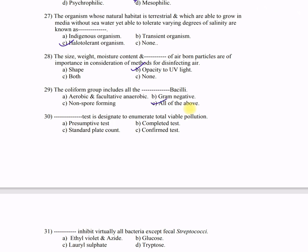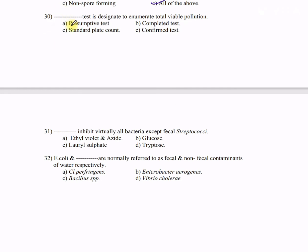Question 30: Dash test is designed to enumerate total viable population — A) presumptive test, B) completed test, C) standard plate count, D) confirmed test. The correct answer is C — standard plate count. The standard plate count is used for the enumeration of all microorganisms which are viable in a given sample.